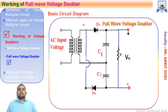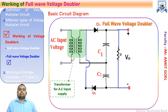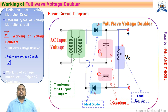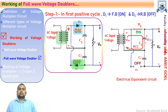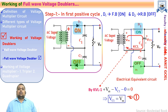This is the basic circuit diagram of the full wave voltage doubler, in which we have an AC supply through a transformer, two diodes D1 and D2, two capacitors C1 and C2, and a load resistance across which the output is taken — essentially across capacitors C1 and C2. In the first positive half cycle, diode D1 is in the on state and diode D2 is in the off state. In the electrical equivalent circuit, D1 is short circuited and D2 is replaced by an open circuit. Applying KVL through capacitor C1 gives: Vm − VC1 = 0, so VC1 = Vm. Due to the high time constant, C1 holds this peak voltage Vm for the next negative half cycle.